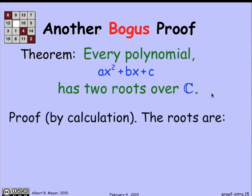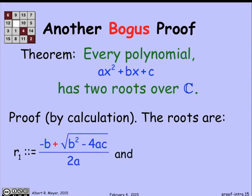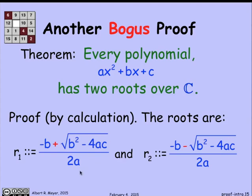How do you prove that? Well, you just write down the formulas for the roots. You know the quadratic formula: one root is minus b plus the square root of b squared minus 4ac over 2a, and the other root is minus b minus this square root over 2a. You could plug these formulas into the polynomial and simplify to show they equal zero. We've just proved that every polynomial has two roots.